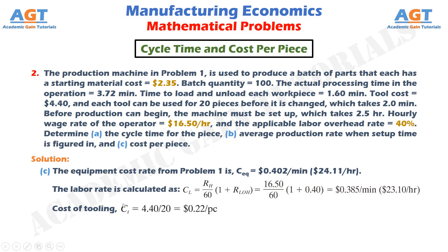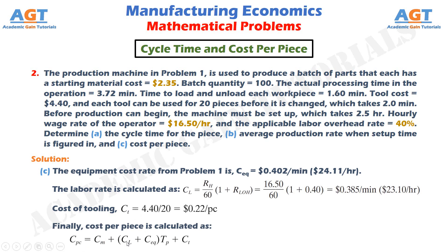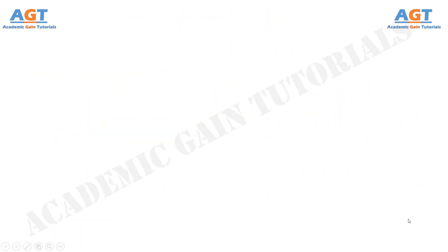Finally, the cost per piece is calculated as: C_pc = C_m + (C_L + C_EQ) × t_p + C_t. Putting all the values in the equation, we obtain the cost per piece as $8.02 per piece. So we have completed the mathematical problems on equipment cost rate, cycle time, and cost per piece. Hope this will be helpful. Thank you.